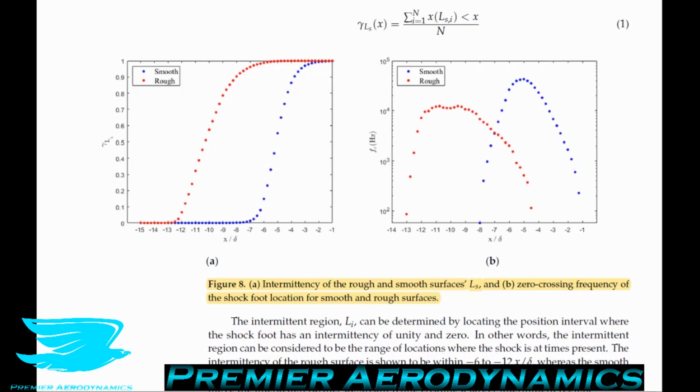For the smooth and rough surfaces, they have them plotted in the left-hand figure. They say that the intermittency of the rough surface is shown to be within minus 6 to minus 12, like upstream of the point at which the flare is up. Whereas the smooth surface lies between minus 2 and minus 7 from this point. So in other words, the shock starts much further upstream for the rough surface. And by the time we even get to the point where the shock will start to be seen at the smooth surface, the rough surface, there's definitely going to be a shock there. So the intermittency range is much greater, but it's also much further upstream than the smooth surface. What this means is that the rough surface pretty much accelerates the formation of the shock. So it's kind of like reduces the critical Mach number, I guess you could say.